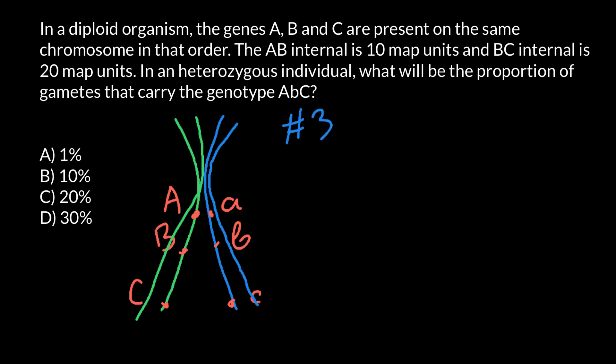During meiosis, we would see such a tetrasome. And according to our problem, between genes A and B, we have 10 map units. And between genes B and C, we have 20 map units.